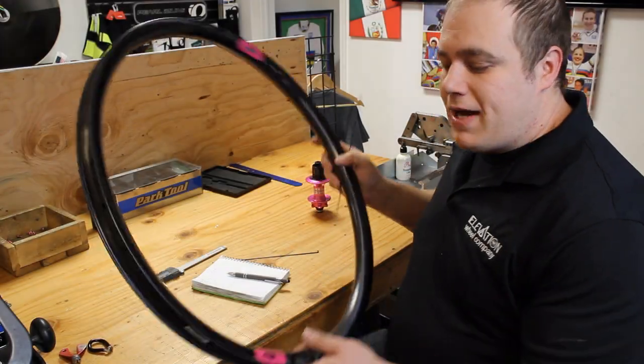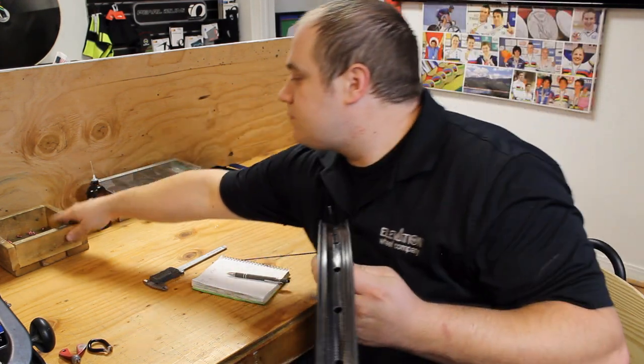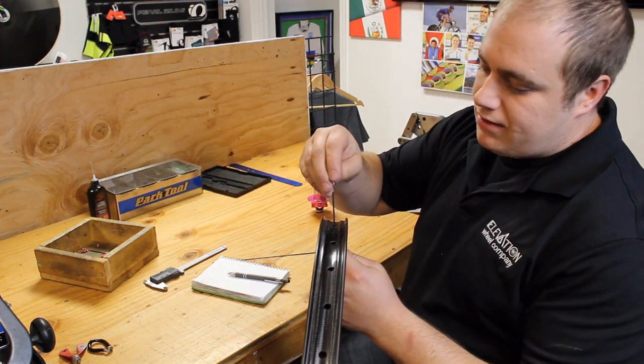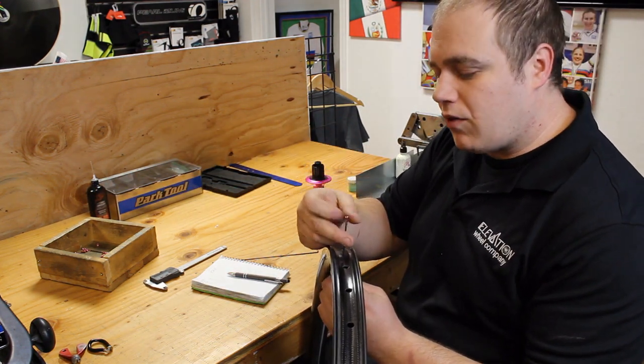All you need to do to measure your own ERD, start at the valve hole, put one spoke through, thread spoke nipple on to where you would like the spokes to end up once the wheel is built.